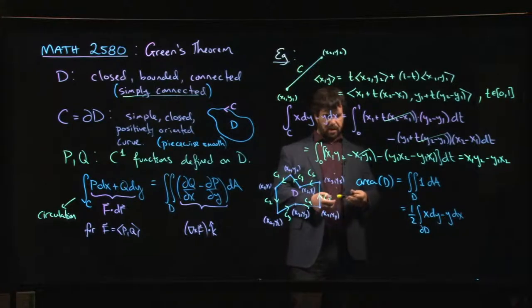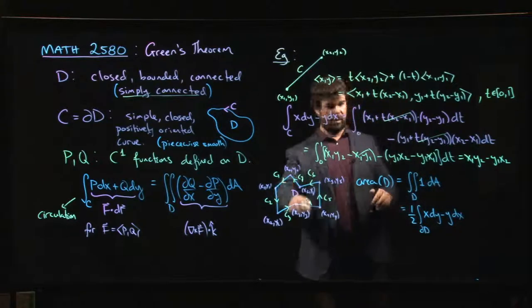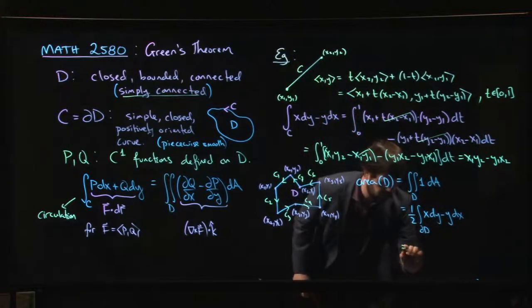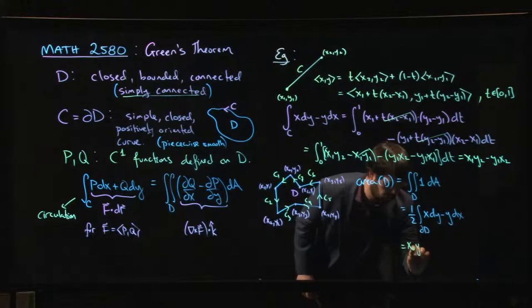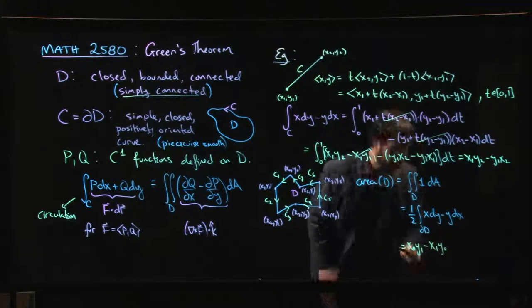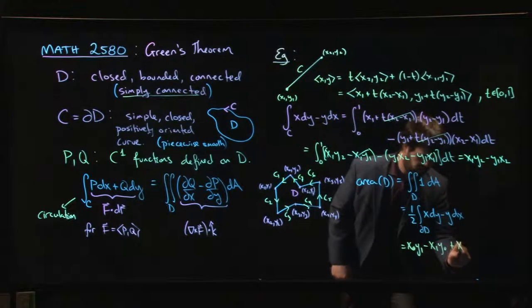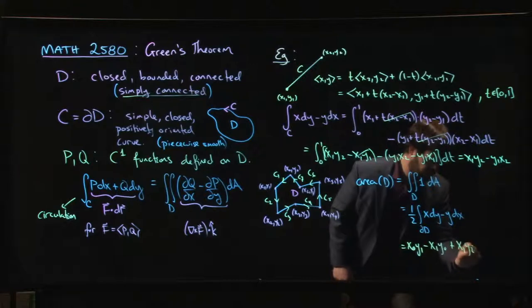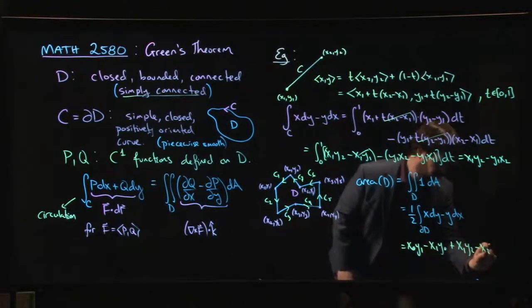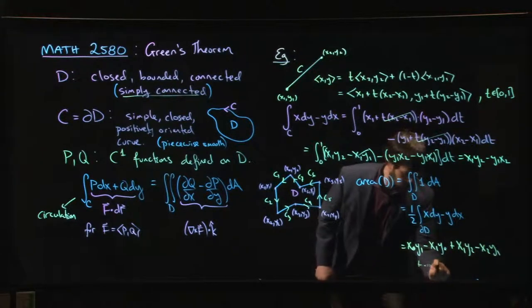All right, so now we know that the area is going to be, with the first pair, it's going to be x0 y1 minus x1 y0. Then I go on to the next one, x1 y2 minus x2 y1, and so on.